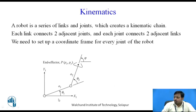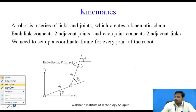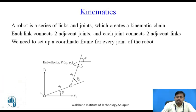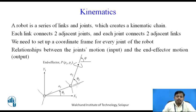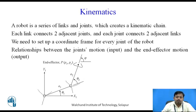Now, we have to set up a coordinate frame. We create a coordinate frame with x, y, z axes for each joint of the robot, and we have to find out the relationship between the joint motion — that is the joint position — and the end effector motion. The end effector, denoted by px and py, is the last part of our industrial robot which performs certain tasks.